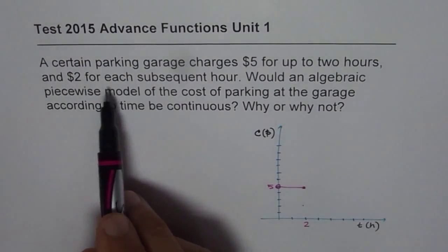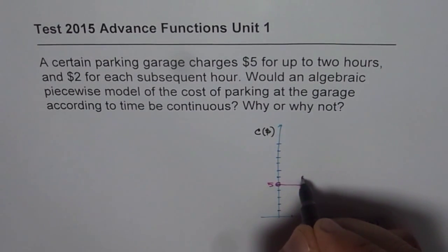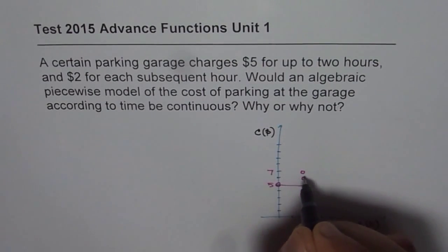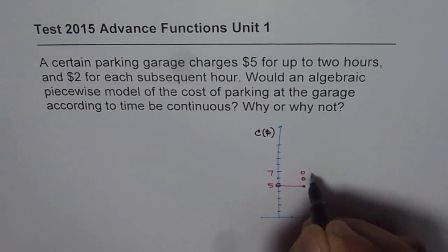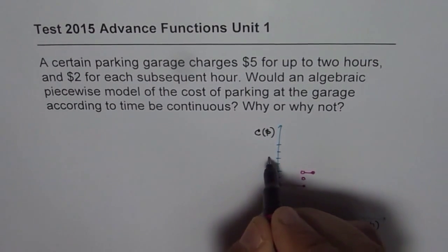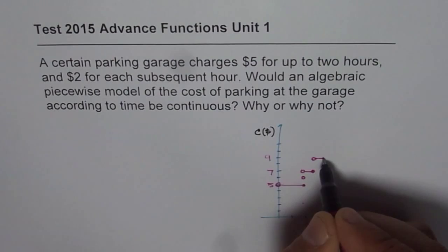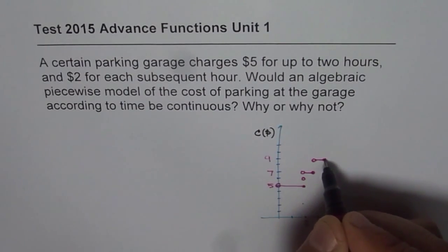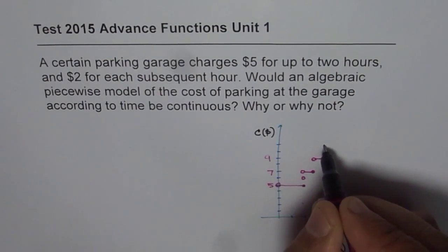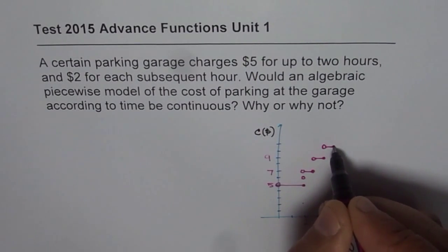And $2 for each subsequent hour — so every time an hour goes by, you pay $2 more. That brings us to $7 at the next hour, then $9, and so on. The function goes up in steps of $2 for every additional hour, giving us a stepwise function.